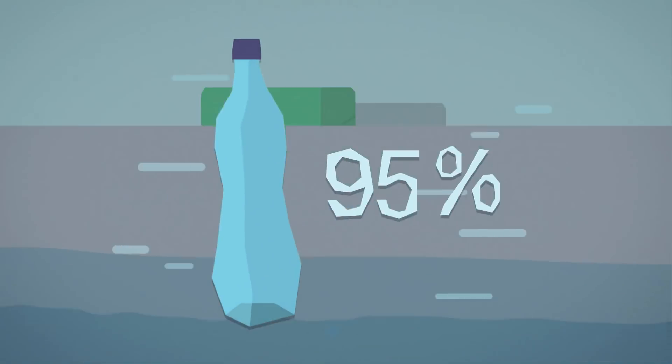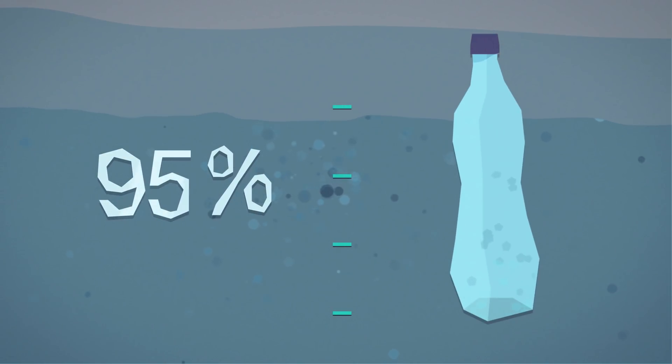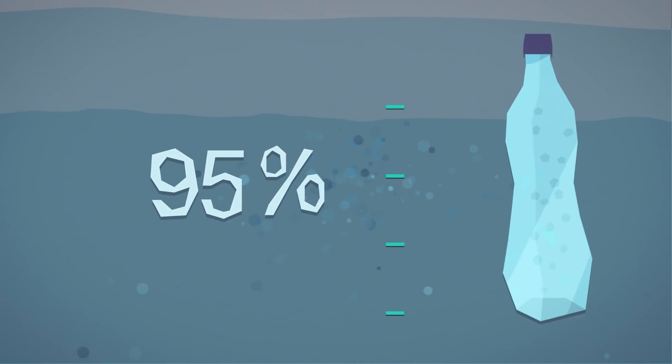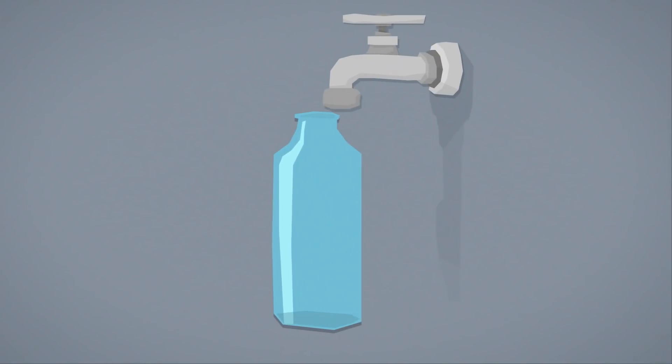Almost 95% of all bottles of water sold in the UK are made from a material called PET plastic, and it lasts forever. Water quality in the UK is very high. There's no need to buy it in a plastic bottle. Use tap water in a reusable bottle and save yourself money.